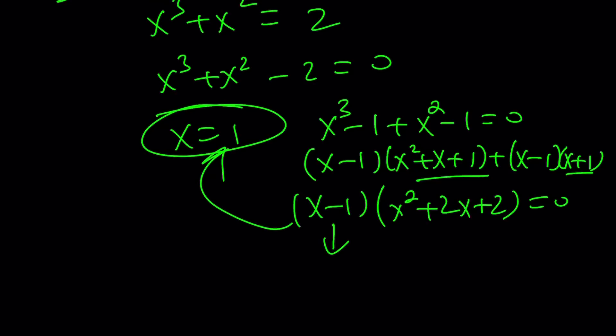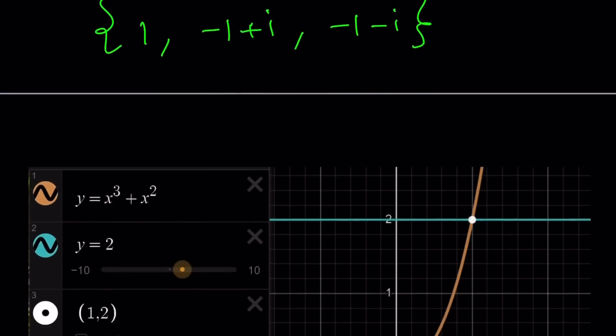This one is not so real. From here, we get x equals, let me just write all the solutions together as a solution set. We got 1. We got negative 1 plus i and negative 1 minus i, which are complex numbers. Let's go ahead and take a look at the graph, and we'll just finish up.